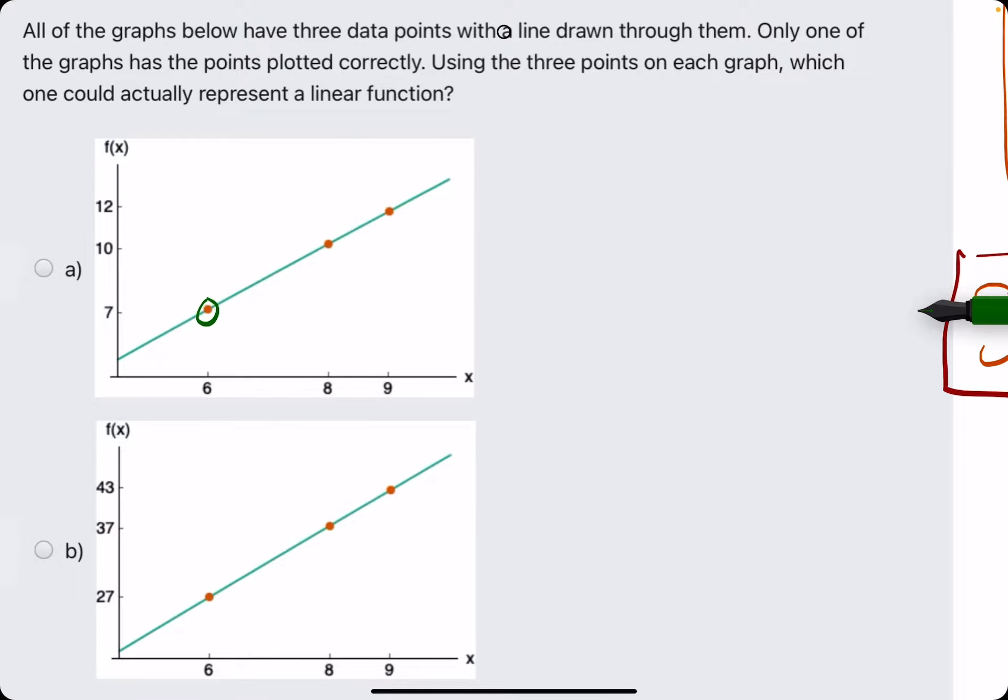Alright, so we're starting with the first two points here. The rise from 7 to 10 is 3, while the run from 6 to 8 is 2. We want to see if 3 over 2 is equal to the slope between the second and third points.